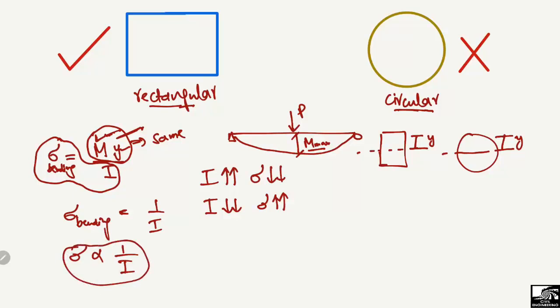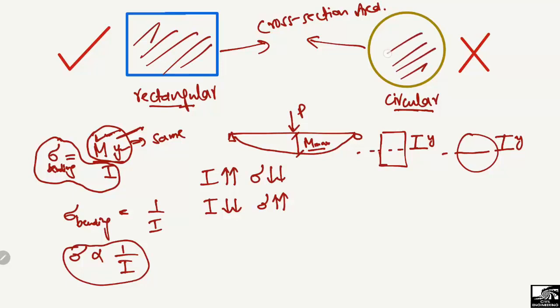We know that for the same cross-sectional area — that is, if the rectangular beam and the circular beam have the same area — the moment of inertia of the rectangular cross-section is always greater than that of the circular cross-section.